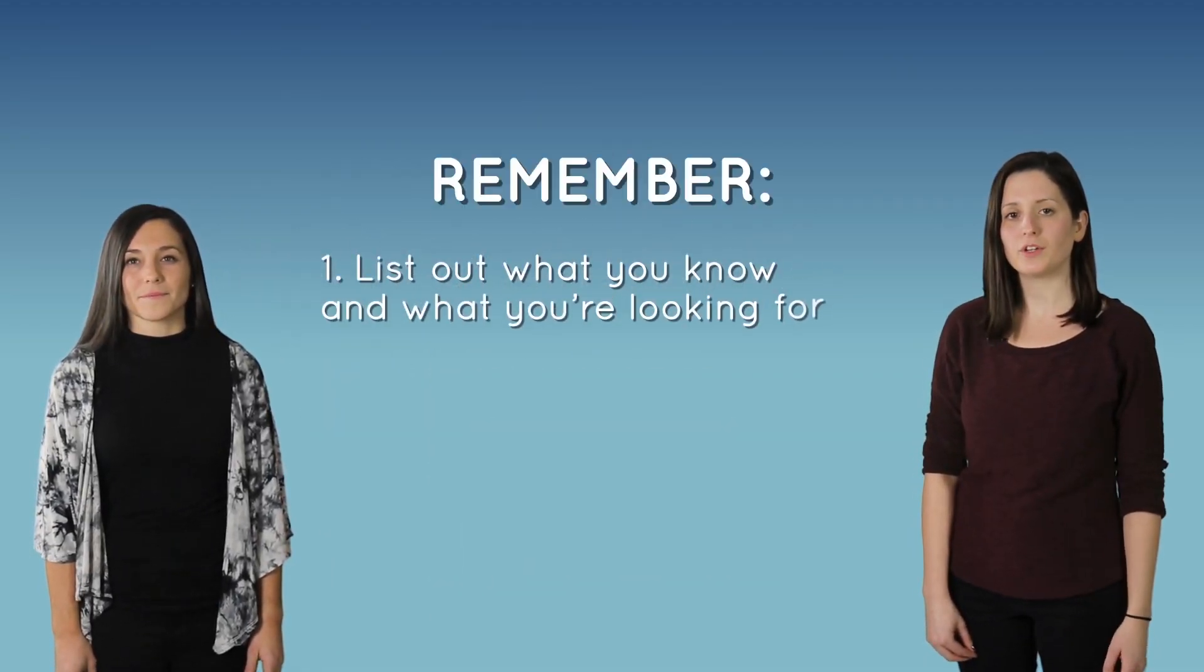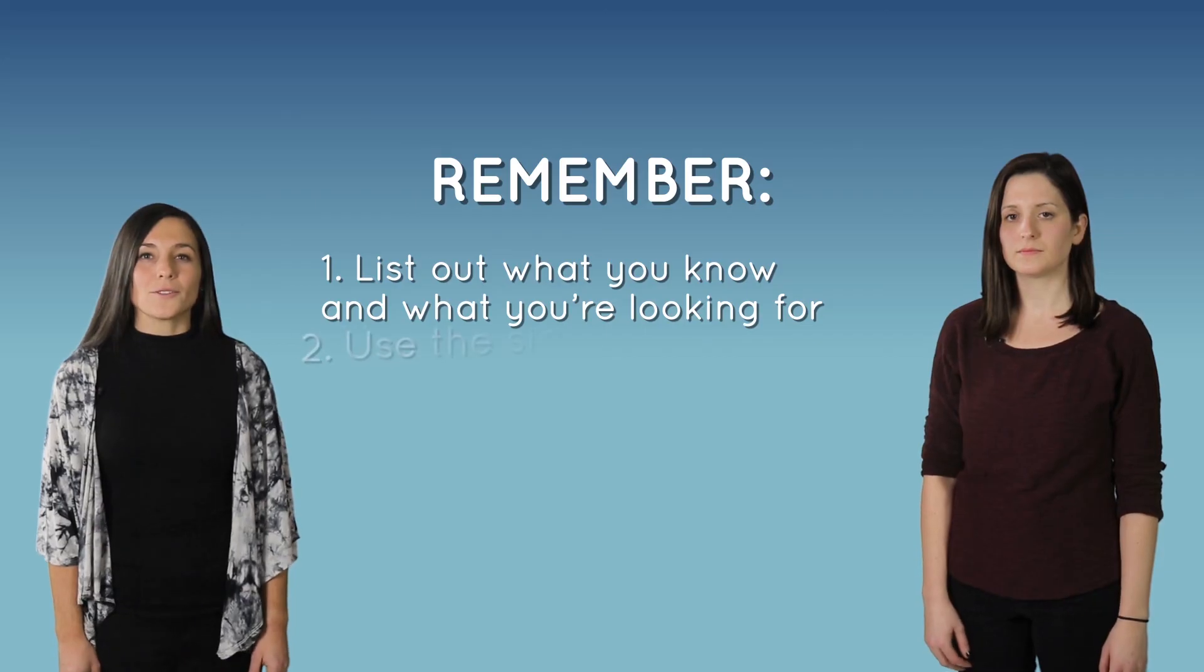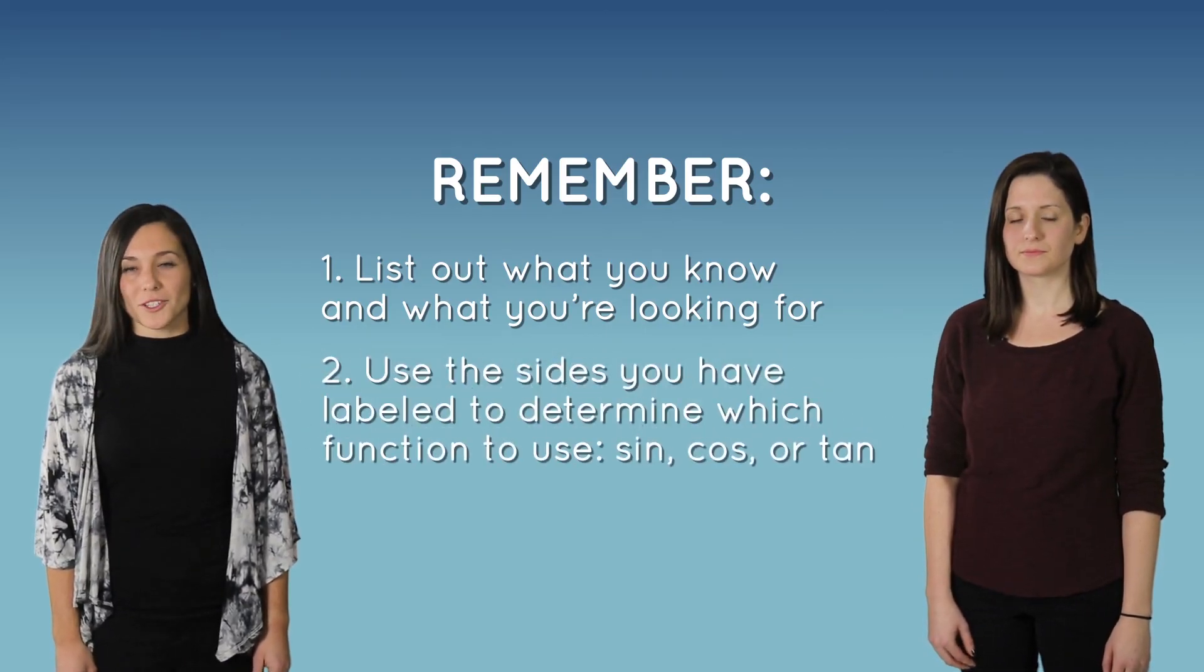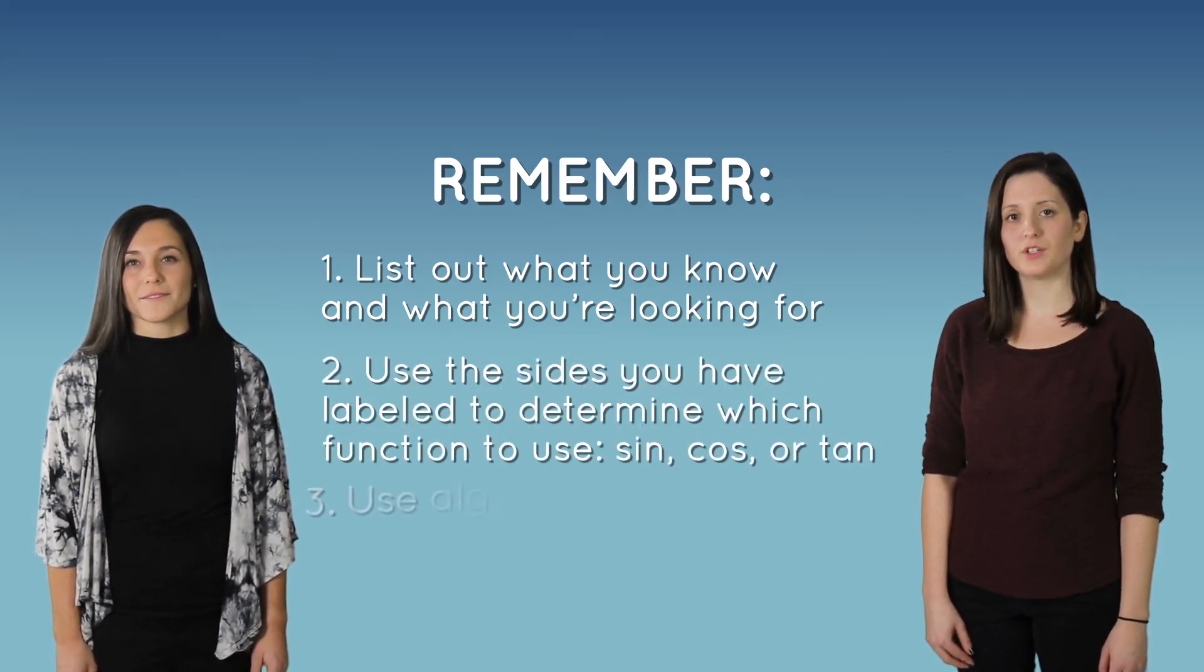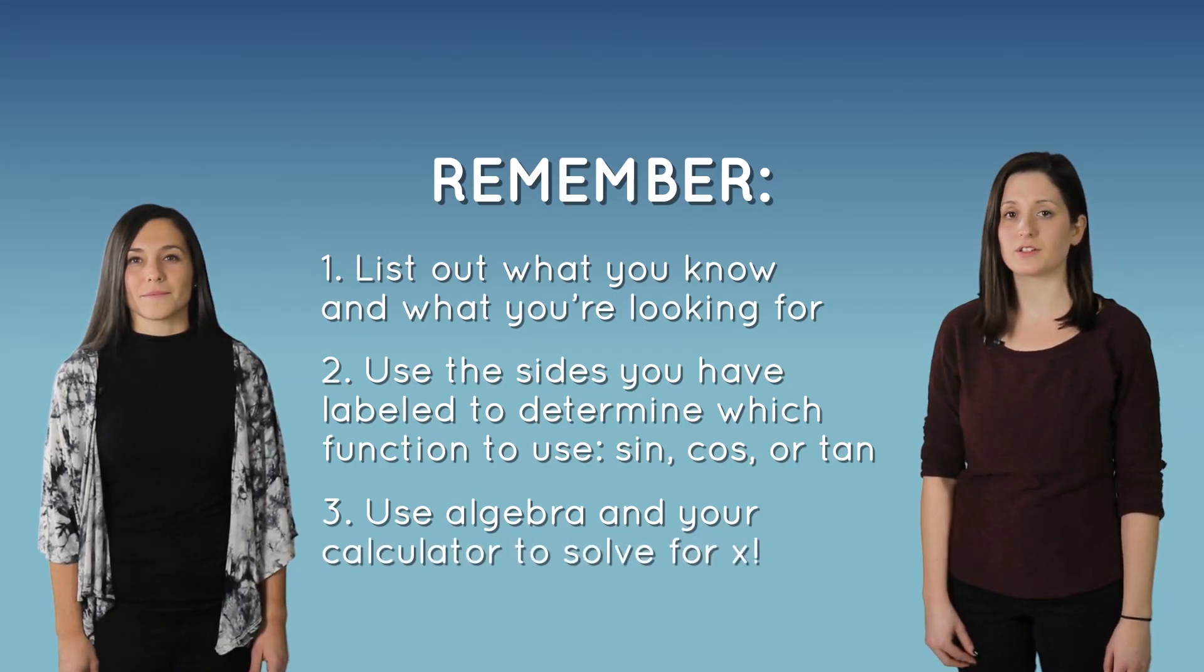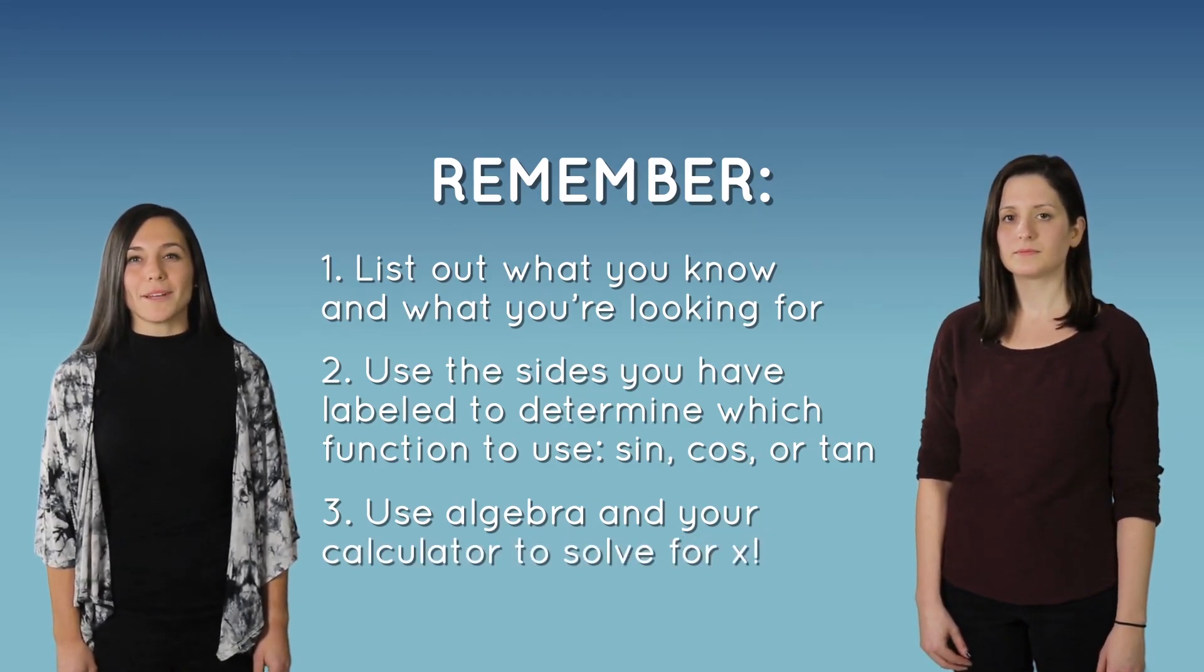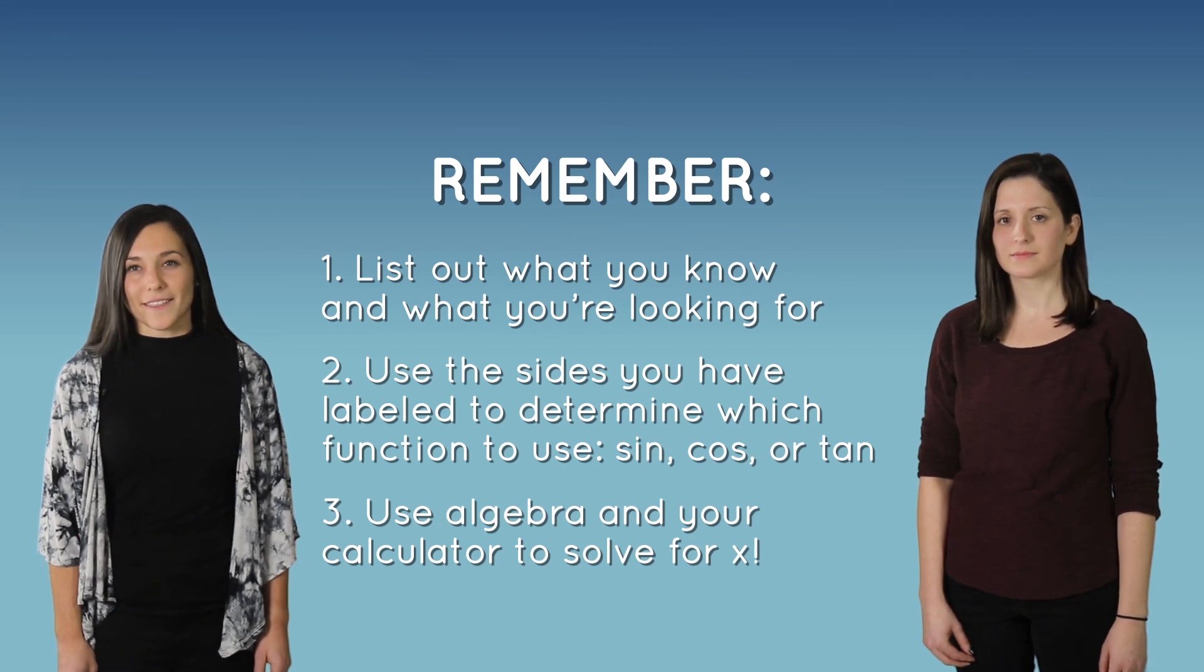Now you know how to use the trigonometric functions to solve for missing lengths. Remember, first list out what we know and what you're looking for. Then, use the sides you have labeled to determine which function to use. And finally, use algebra and your calculator to solve for x. And that's how you use the trigonometric functions to solve for a missing side length.